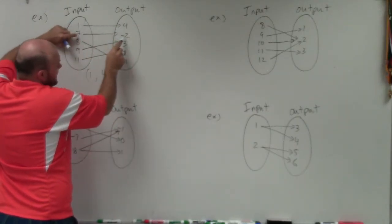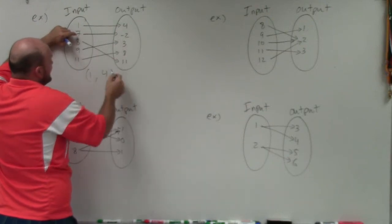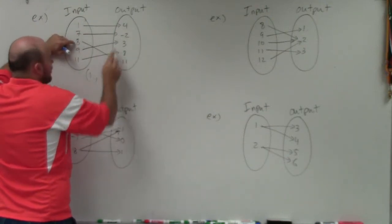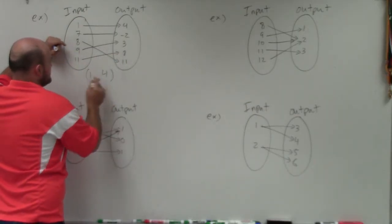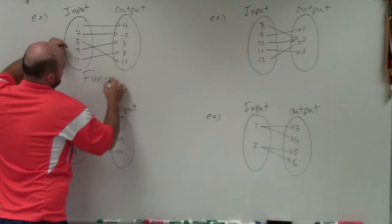7 uniquely goes to negative 2. 7 is not going to any other output. 8 uniquely goes to 11. 8 is not going to any other number. 9 goes to 3, 11 goes to 8. Therefore, this is a function.